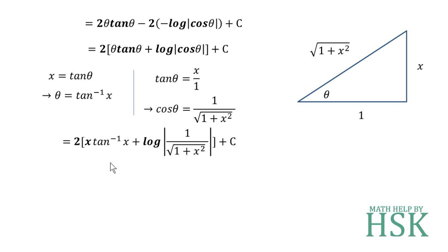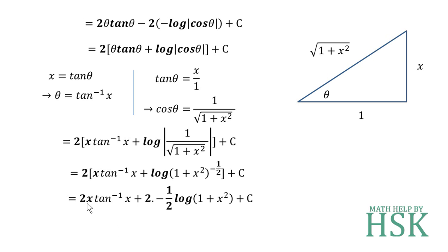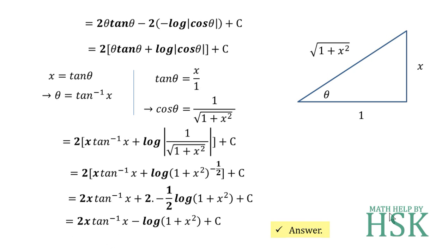Replacing cos θ with 1/√(1 + x²), the expression becomes 2(x tan⁻¹x + log(1/√(1 + x²))) + c. We can simplify: 1/√(1 + x²) = (1 + x²)^(−1/2), so log of this is −(1/2) log(1 + x²). Multiplying out, the 2 and −1/2 cancel, giving the final answer: 2x tan⁻¹x − log(1 + x²) + c.